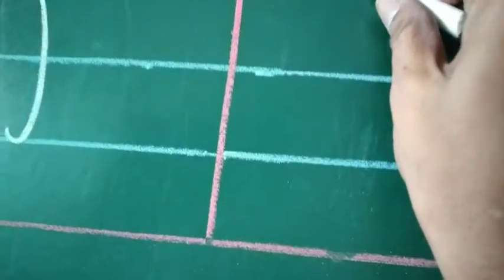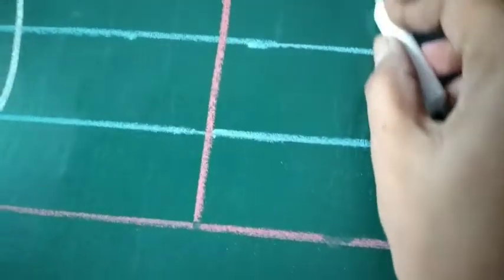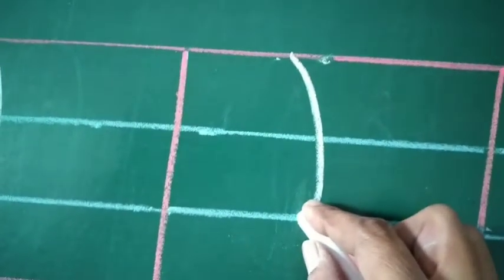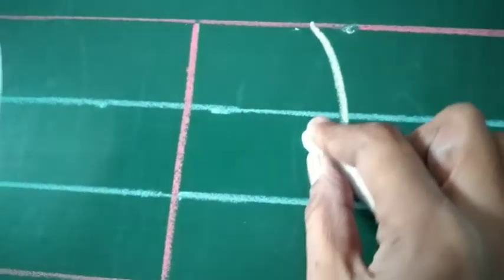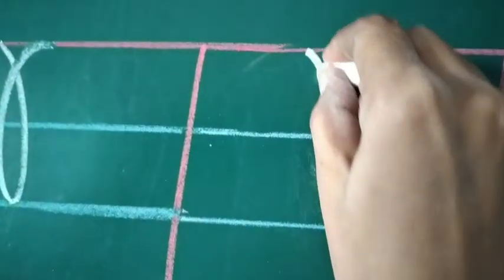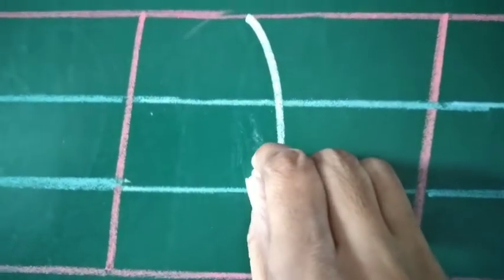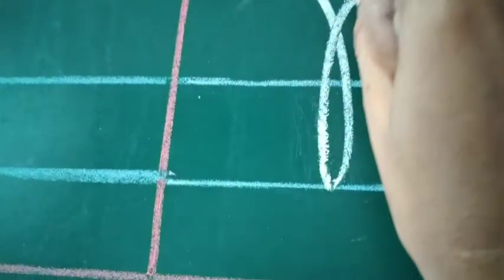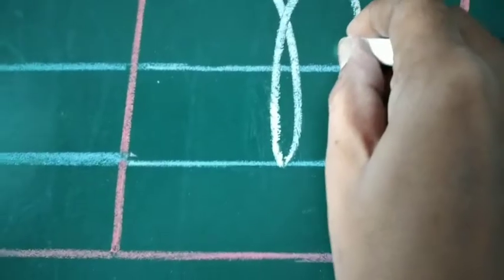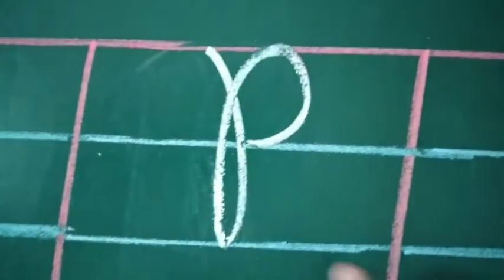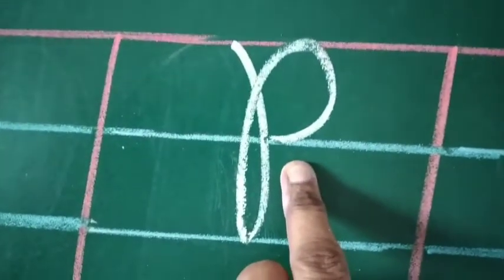Then in the second part, what will we do? Start from the red line, take a little turn, then go up to touch the red line and take a little turn. Okay. Then in the third part, start from here, take a small turn, go back up to the red line, and up to the first blue line, make a half circle.